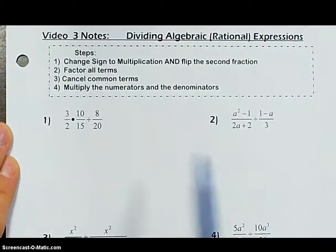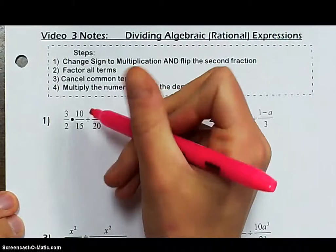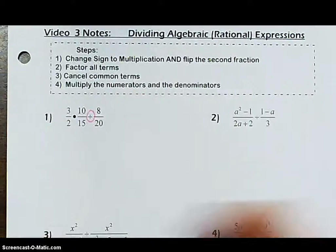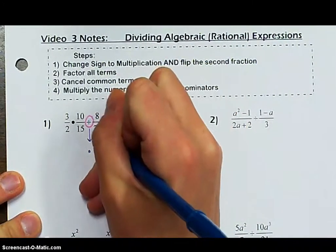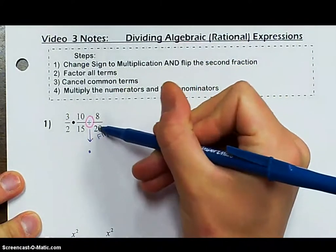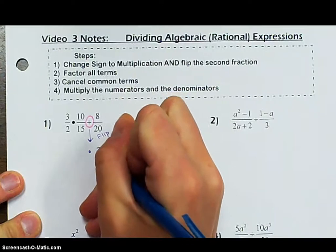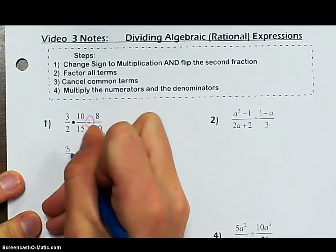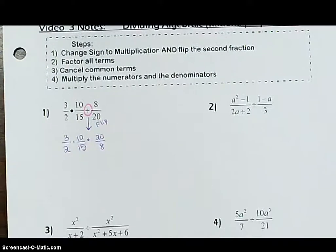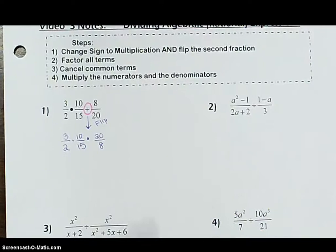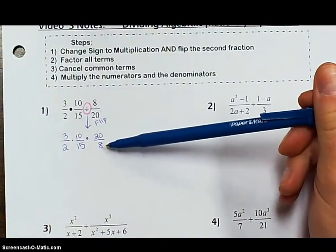Let's revisit sixth grade. We have a fraction times a fraction divided by a fraction. We cannot divide a fraction by a fraction, so instead what we're going to do is change this to multiplication, and then you have to flip whatever fraction comes after the division sign. So this is going to become 20 all over 8. Everything else stays exactly the same.